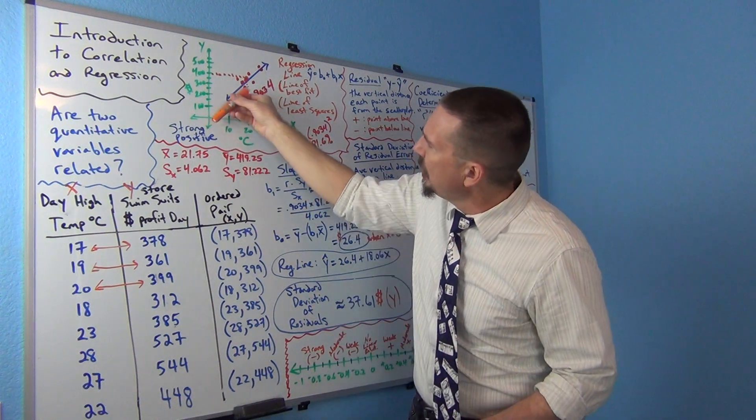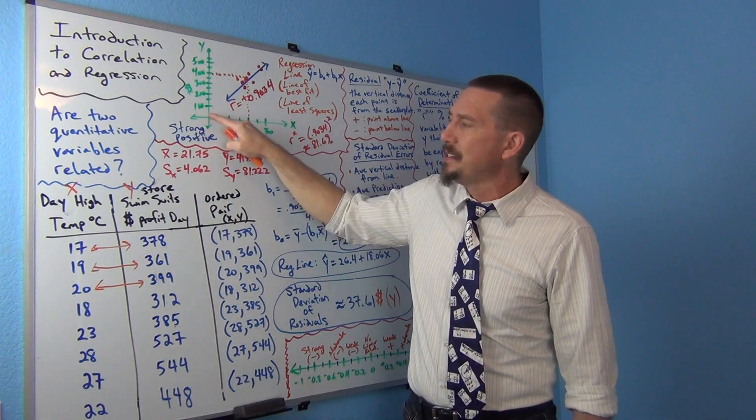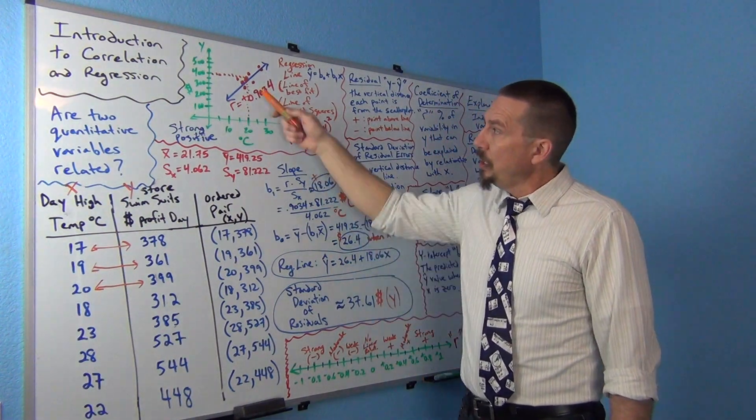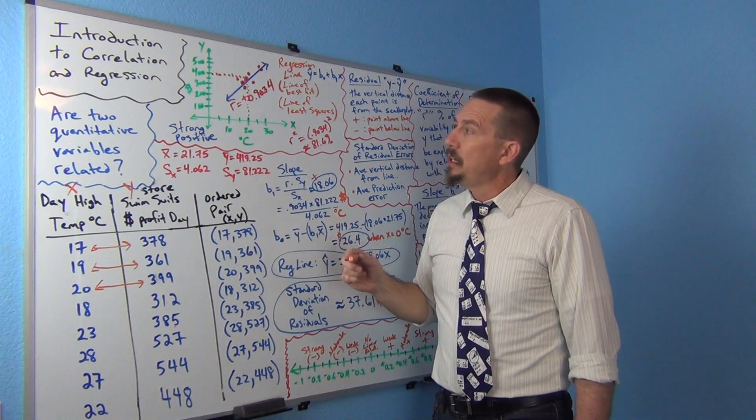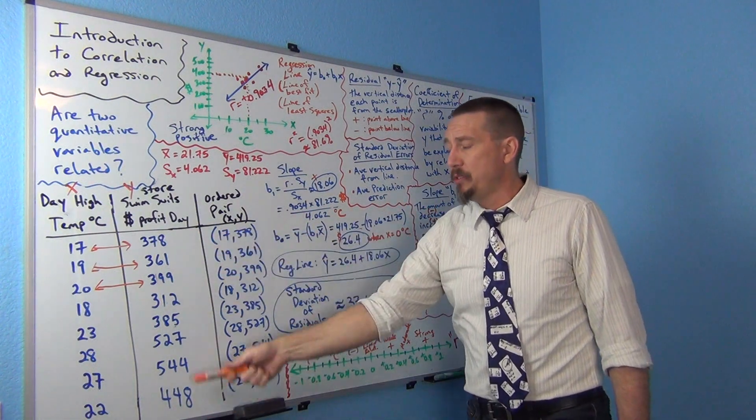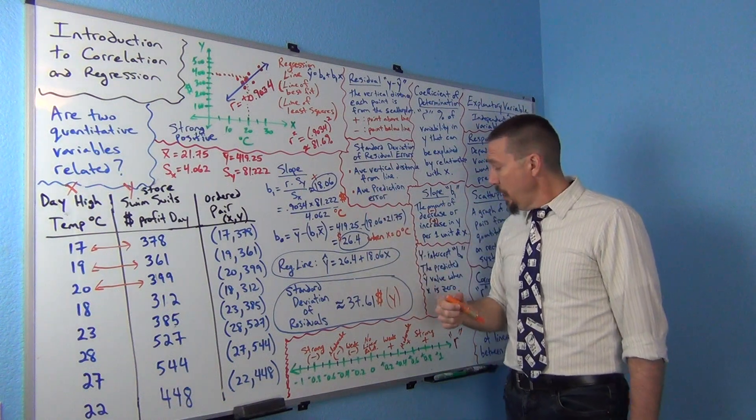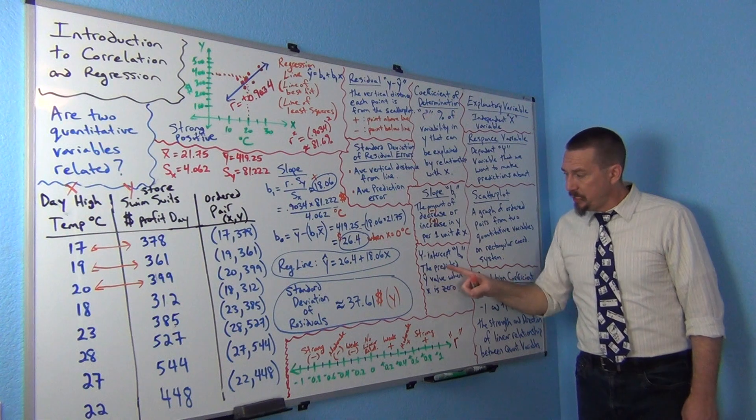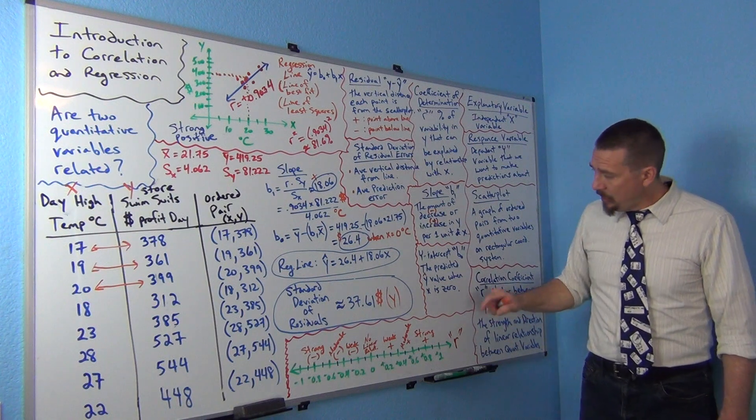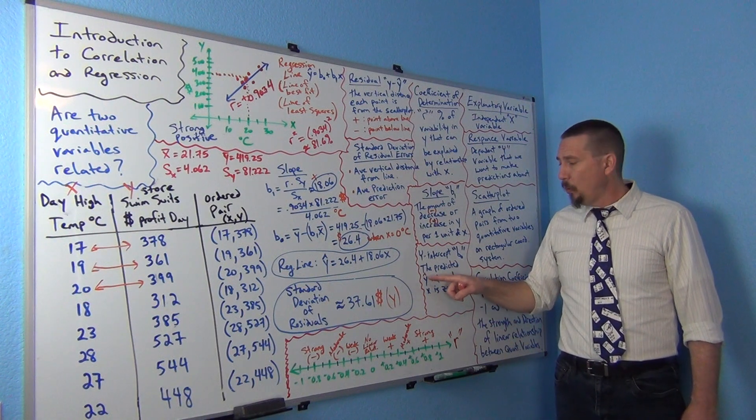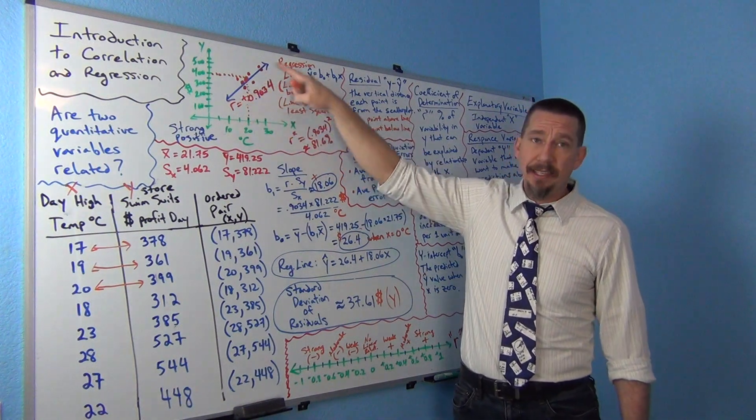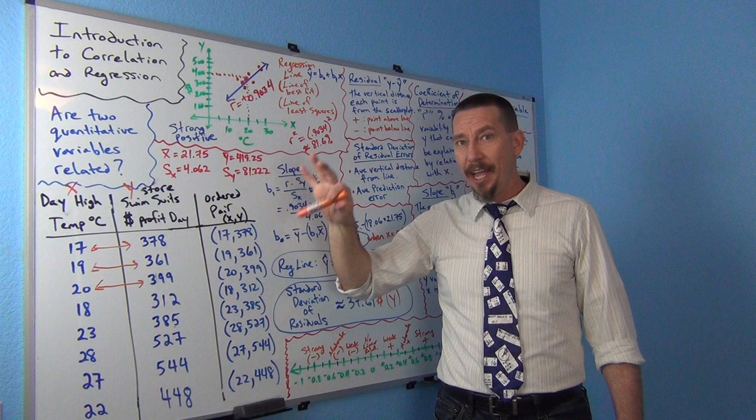So if you remember, the y-intercept is not one of these points where the x is zero. It's actually where the line crosses. In fact, if I kind of continue this line, it kind of looks like it'll cross at about 26 there on the y-axis. So when x was zero, the line kind of crosses the y-axis at about 26, so 26.4. But it's the line. It's the predicted y value. It's not the actual y value. It's not one of these. It's where the line crosses. So we often say the y-intercept b0 is the predicted y value when x is zero.